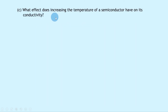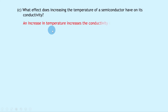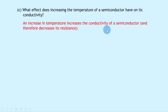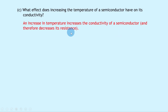Lastly, part c says: what effect does increasing the temperature of a semiconductor have on its conductivity? An increase in temperature increases the conductivity of a semiconductor and therefore decreases its resistance. We can think of conductivity as being like the flow of electrons, whereas resistance is the opposition to current flow. So conductivity and resistance for semiconductors are essentially opposites.